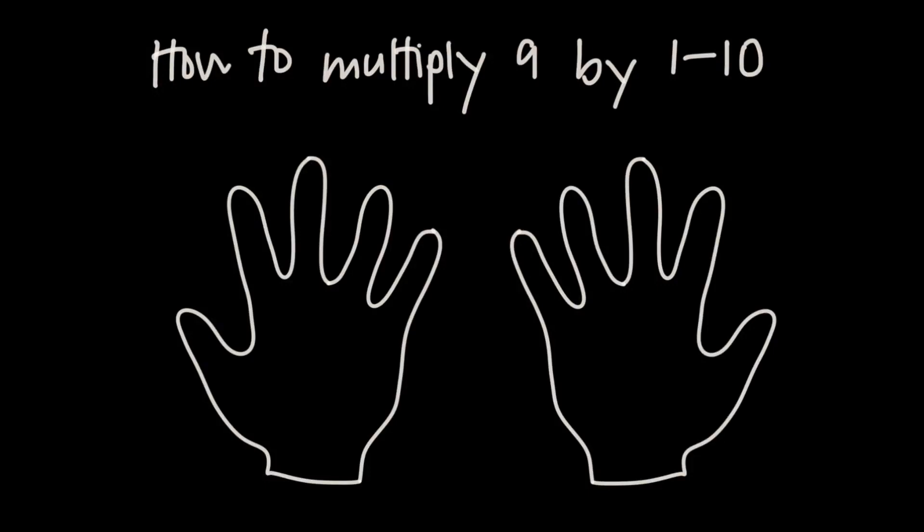Here are two ways to multiply 9 by any number 1 through 10. The first way involves using your hands.